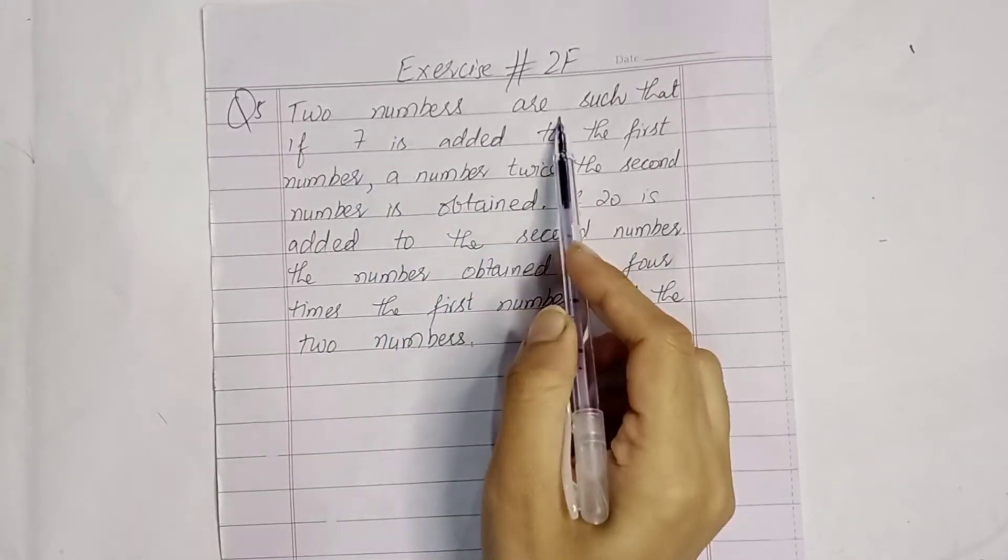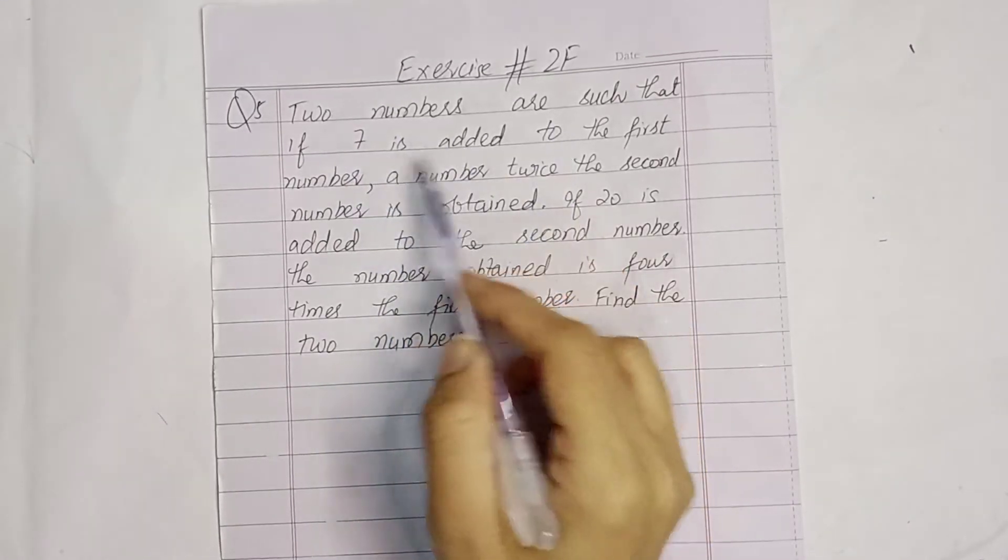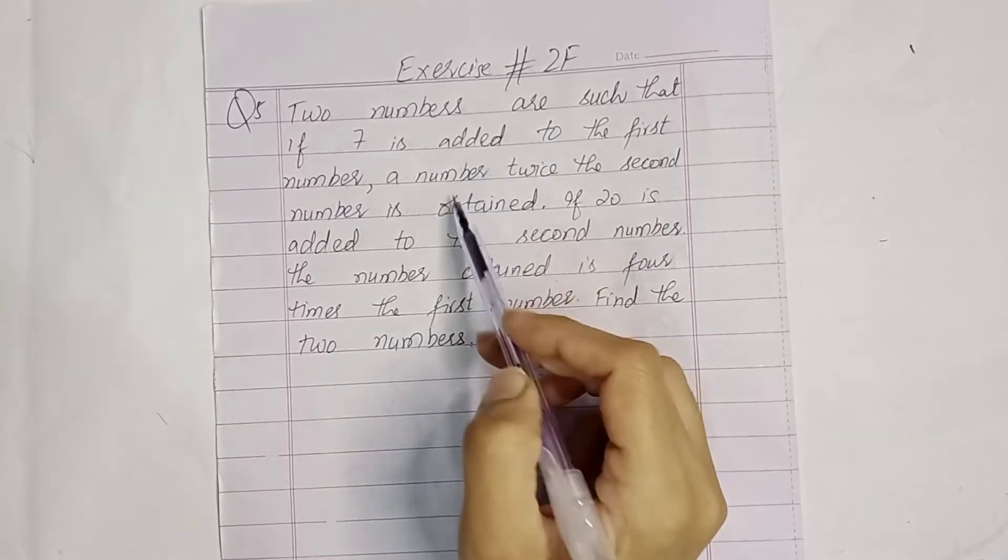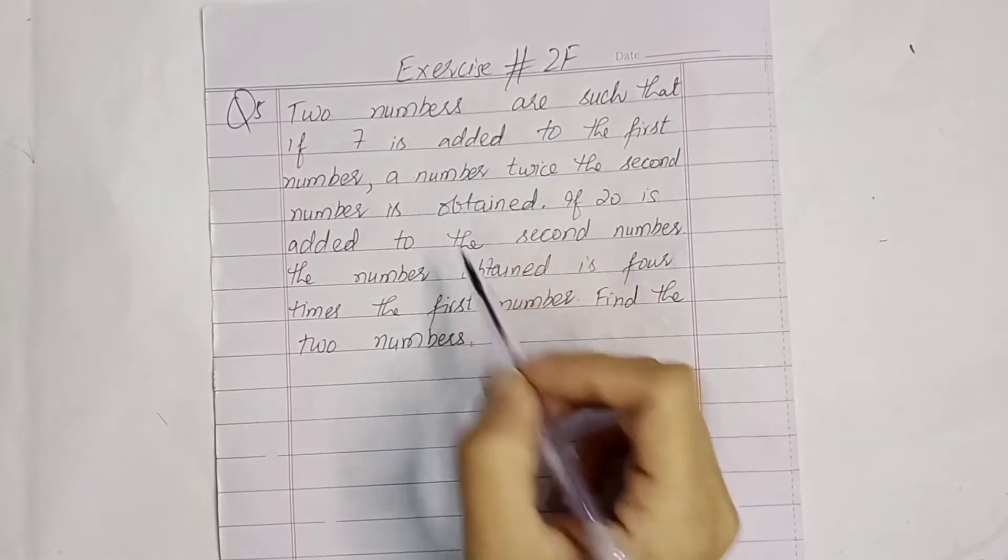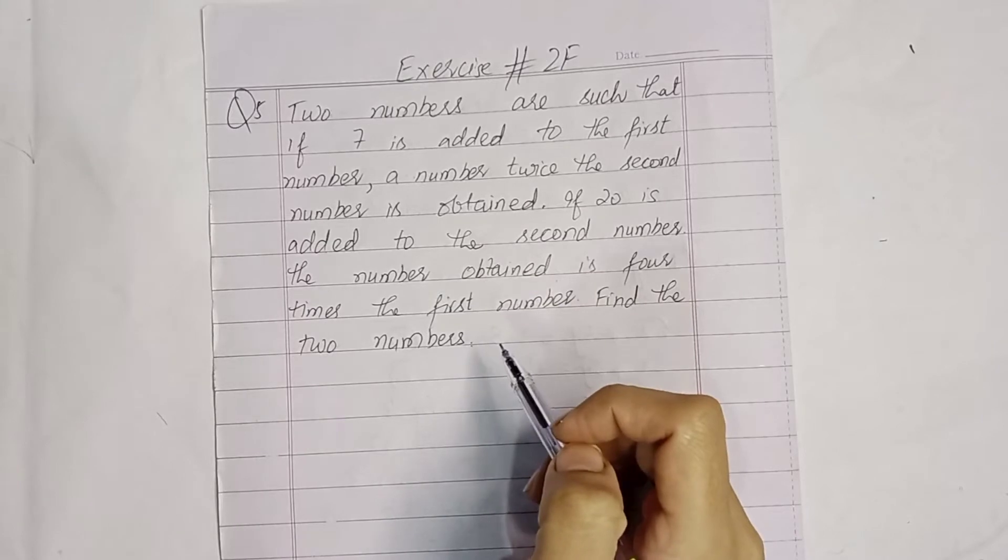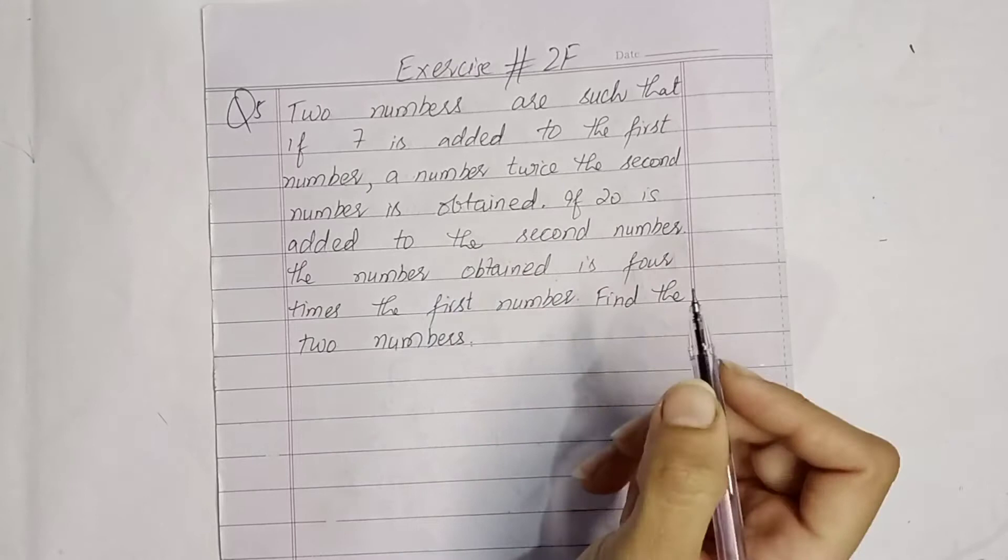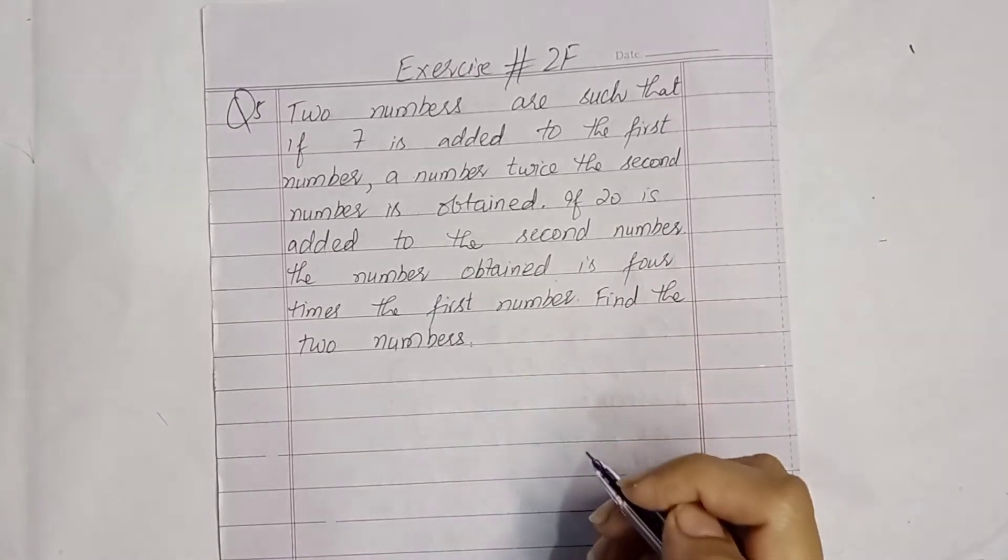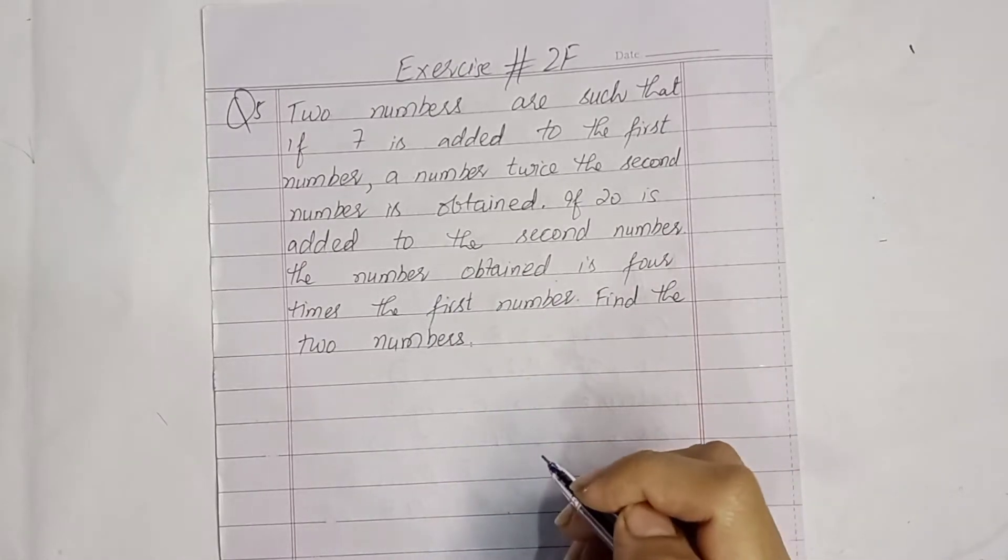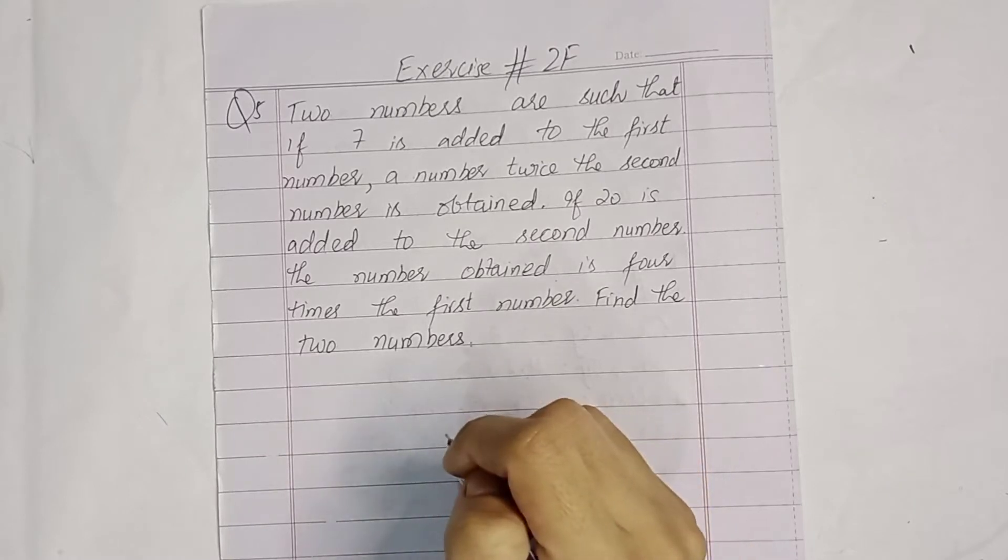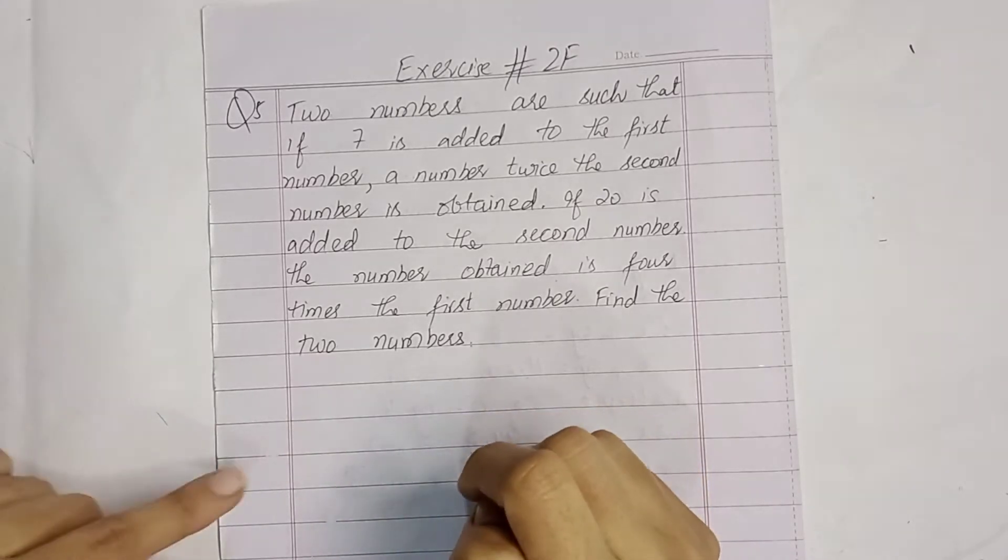This situation is that if 2 numbers are like 7, if it is added to the first number, then the second number is twice, double. The other situation is, if 20 is added to the second number, then the number 4 times will be the first number. So first of all, we need to write this equation, how to make our equations.